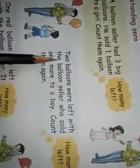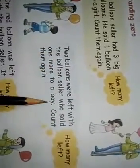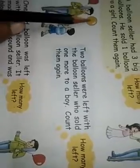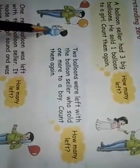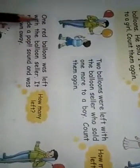Two balloons were left with the balloon seller, who sold one more to a boy. Count them again. How many left? When two balloons were left with the balloon seller, the yellow balloon he sold to a boy — that yellow balloon was sold to the boy.